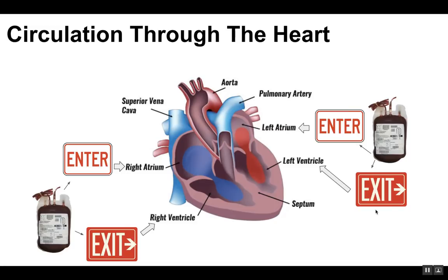Blood enters the heart through the left and right atria and exits through the left and right ventricles. The atria are where blood comes into the heart from both sides, and it exits from the right and left ventricles. There is a valve that connects the ventricles to the atria — it opens and closes, and when it's open, blood moves from the atrium into the ventricles to be pumped out to the rest of the body.